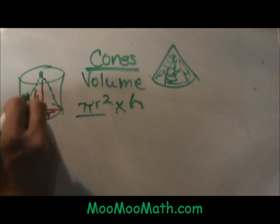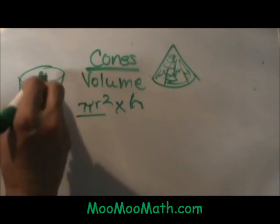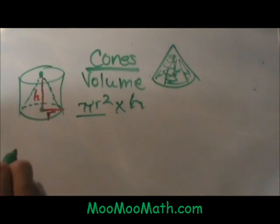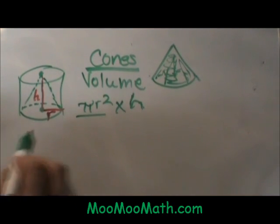Three of these cones can fit inside of this cylinder. It looks like it could be two, but it is actually three. So the volume is a one to three ratio.